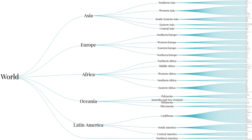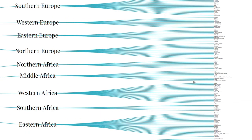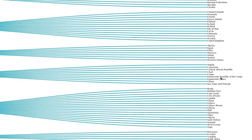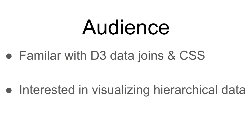This is the tree visualization we're going to make in this video. It shows the world, major world regions, smaller subregions, and at the leaf nodes there are countries. This also has panning and zooming, so you can zoom in to the countries here to read the labels. If you're already familiar with D3 data joins in CSS and you're interested in visualizing hierarchical data, then this video is for you.